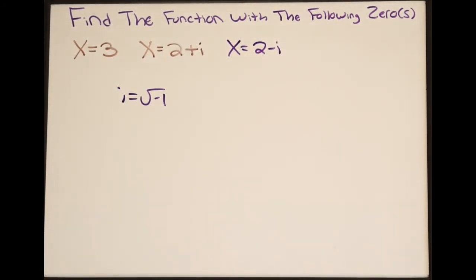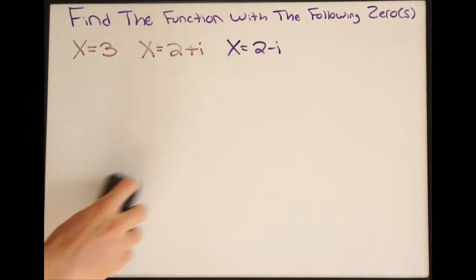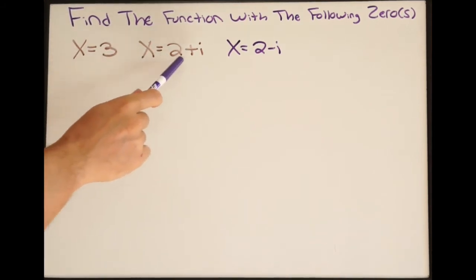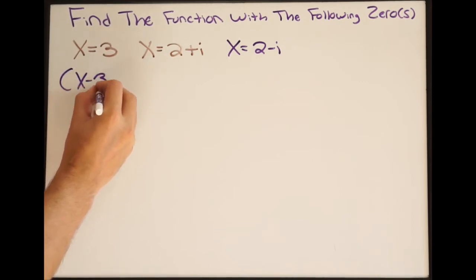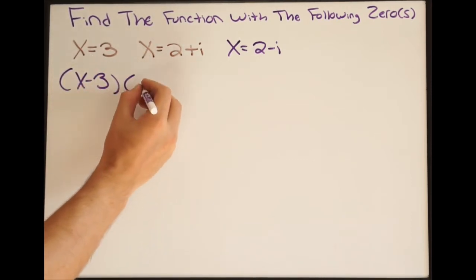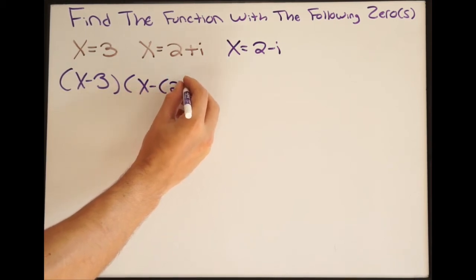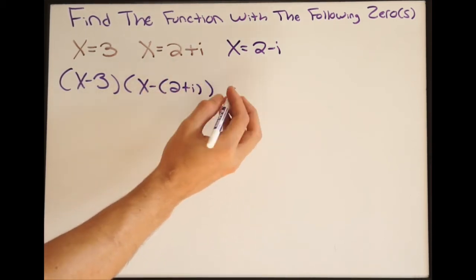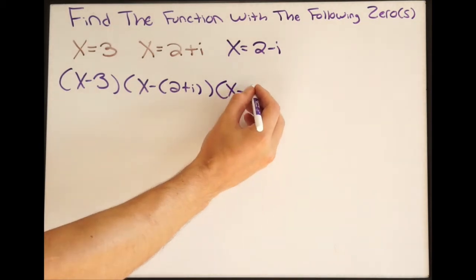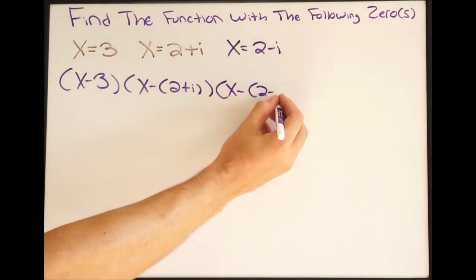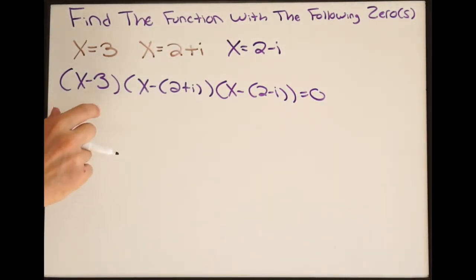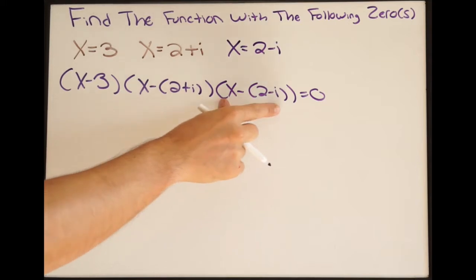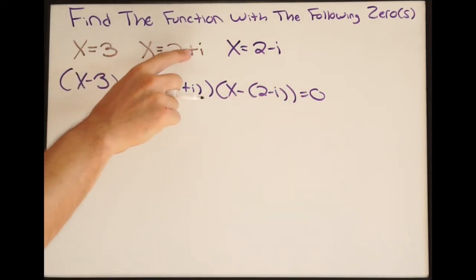Now we have all our zeros listed and we can work on finding the function that has these zeros. We're simply going to put these into their factored form. So x equals 3 came from (x minus 3), x equals 2 plus i came from (x minus (2 plus i)), and x equals 2 minus i came from (x minus (2 minus i)), and this is all equal to zero. You would set each factor equal to zero and solve — that's where the zeros come from.